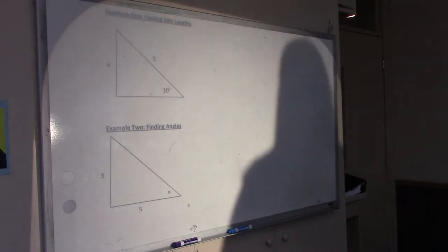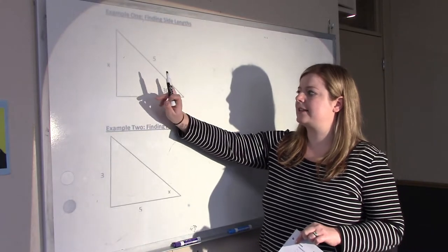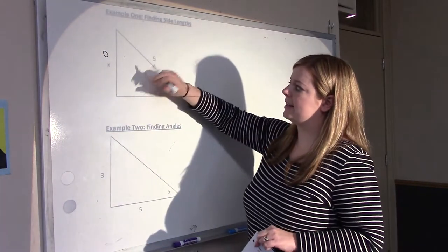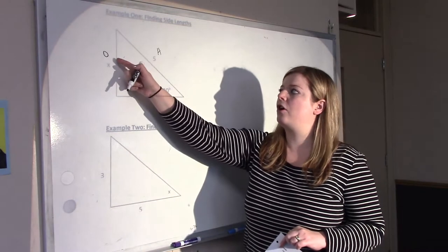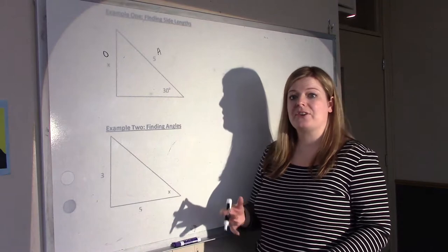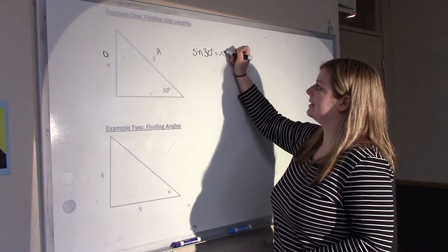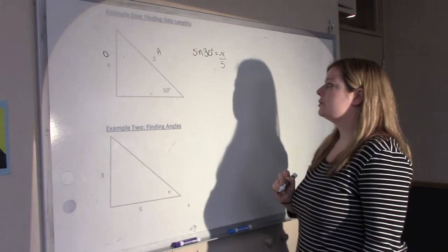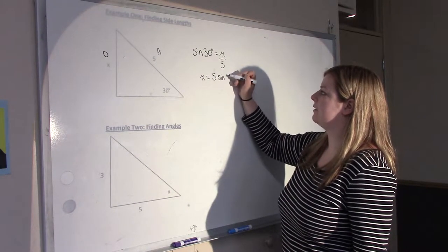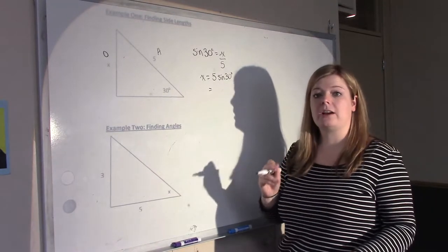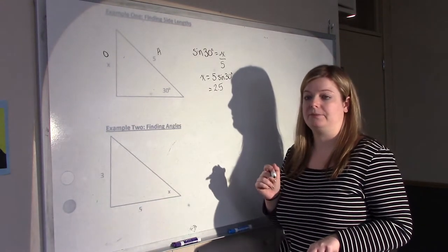So you can use SOHCAHTOA to do two things: either to find the side length, or to find an unknown angle. So in this case, we are given the angle 30 degrees. Now, the opposite is unknown to us, and the hypotenuse is known. Notice there's nothing going on with the adjacent. So we have O and H in place. You should think SO. So sine is the ratio you should use. So the sine of 30 degrees is equal to opposite, which in this case is X, over hypotenuse, which in this case is 5. So now you'd like to solve for X. So you isolate X by multiplying both sides by 5. So you get X is equal to 5 times sine of 30 degrees. Now put that in your calculator to make sure you're using your calculator properly. Your calculator should be in degrees. And you get exactly 2.5.